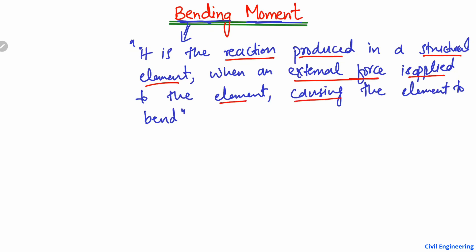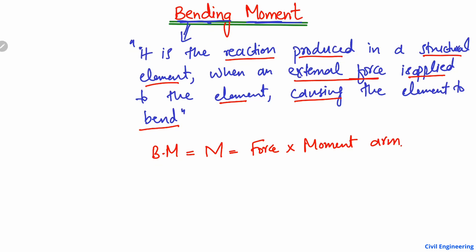Now mathematically, bending moment is equal to the moment, and it is equal to the force multiplied by the moment arm. Now if I draw an example, let me consider a beam here.